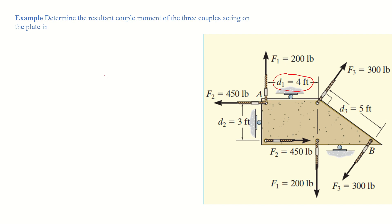The perpendicular distance for F1 is 4 feet. We calculate the moment: M equals F1 multiplied by 4. This F1 force rotates the plate in the clockwise direction, so it carries a negative sign. The second force F2 is 450 pounds, and the second F2 is opposite to this force.